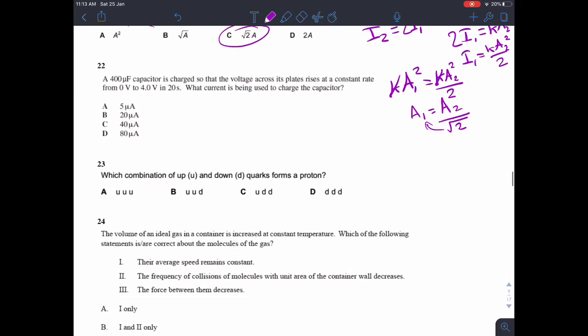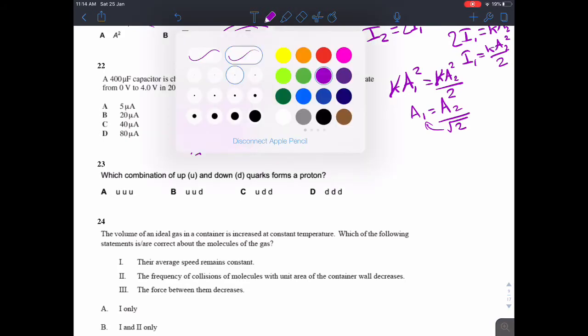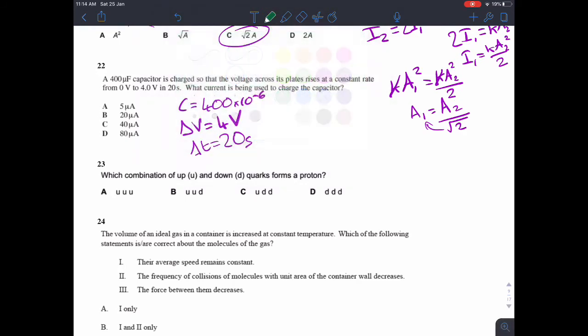Question 22. A 400 microfarad capacitor, C equals 400 times 10 to the minus 6, is charged so that the voltage across its plate rises at a constant rate from 0 volts. Change in voltage equals 4 volts to 4 volts in 20 seconds. Change in time is 20 seconds. I'm going to use a different color for the rest of this to differentiate from the question above.